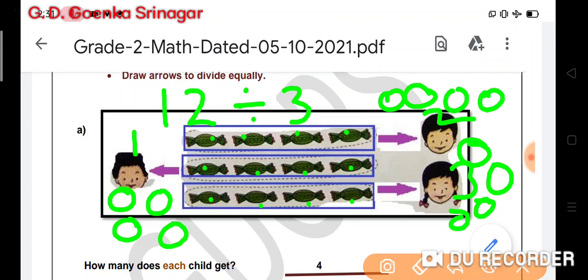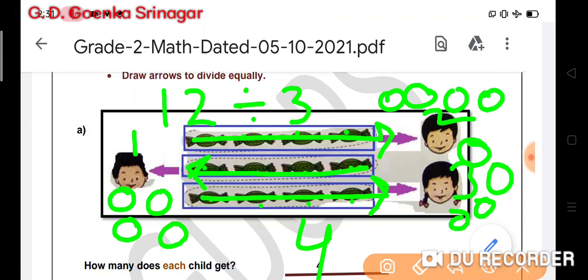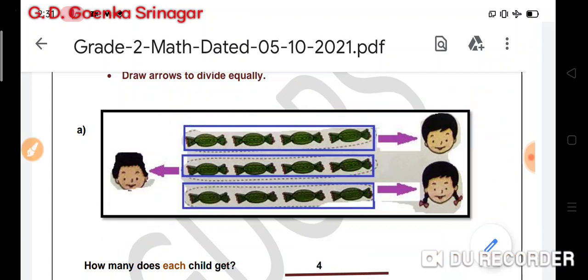So each child gets 4 toffees. How many does each child get? 1, 2, 3, and 4. Or we can count it here: 1, 2, 3, and 4.